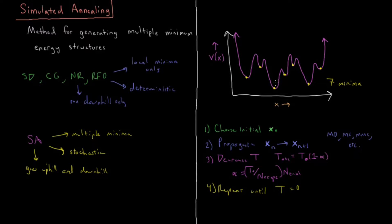So once we get to T equals zero, the system is frozen. A classical system at zero Kelvin cannot move. It does not have any kinetic energy.